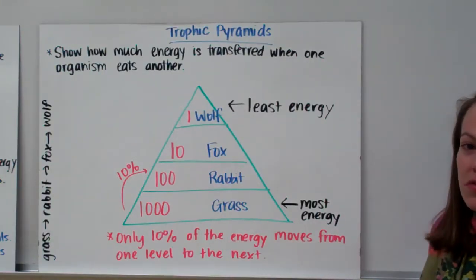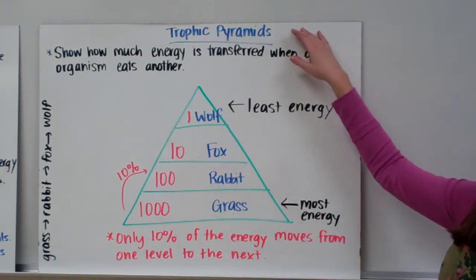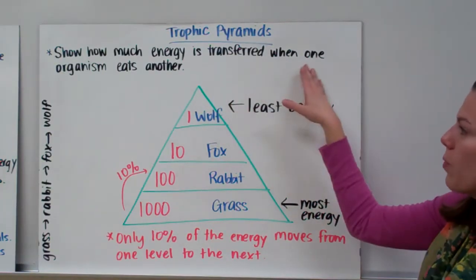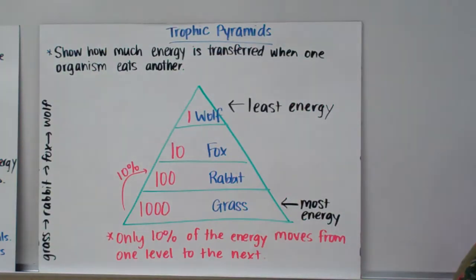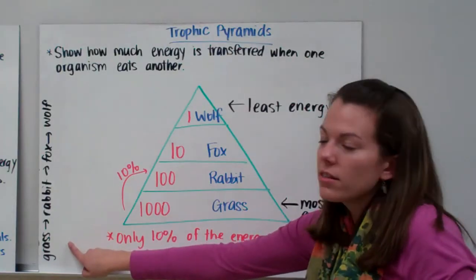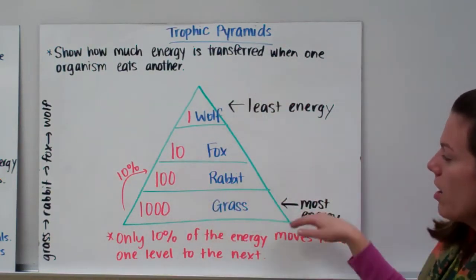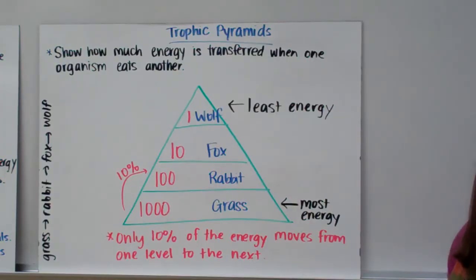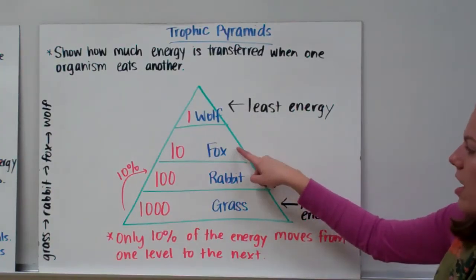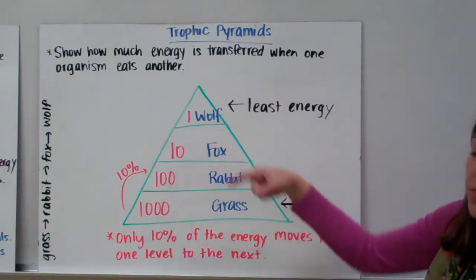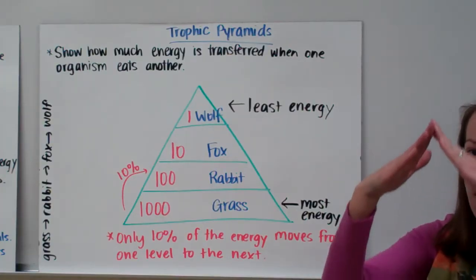Let's look at how energy is transferred from one living thing to another and how much energy we actually get from the food we eat. A trophic pyramid is a diagram that shows how much energy is transferred when one organism eats another. Our food chain is: grass, then the rabbit eats the grass, then the fox eats the rabbit, then the wolf eats the fox. In the trophic pyramid, you always put the producer — usually the plant — at the bottom. So grass goes at the bottom, the rabbit on the next level, then the fox, then the wolf on top. The pyramid gets smaller as it goes up, showing that we lose energy as we move up the food chain.